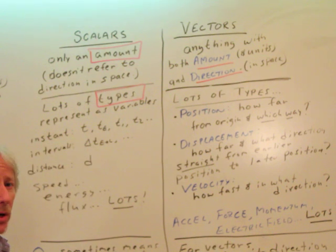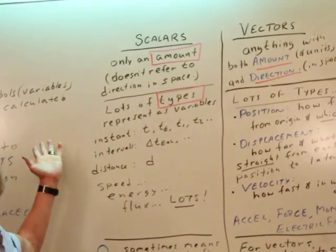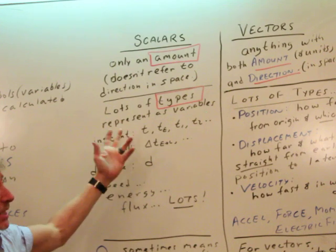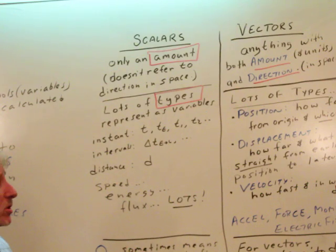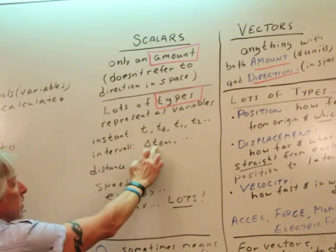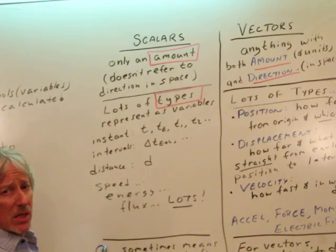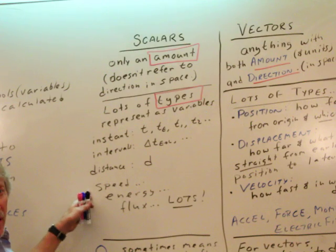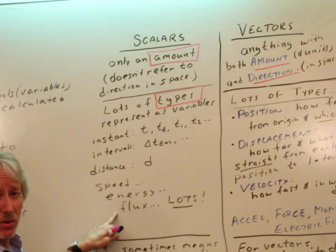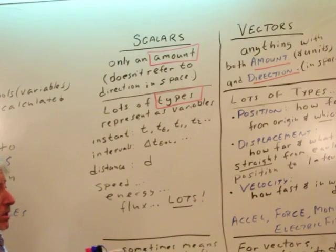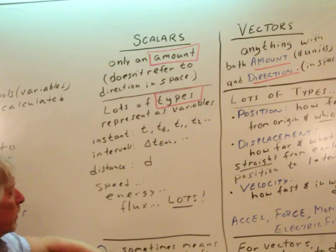All right, so let's give lots of examples. You've already learned some kinematics concepts. There's lots of types of scalars that we represent as variables. You know, instant t, better to subscript it, t earlier, t at state one, t at state two. There's no direction to that. An interval in time, delta t from earlier to later, there's no direction there. Distance is d. Speed is a scalar. Energy is a scalar. Flux is a scalar, which you don't know what that is. There's lots of scalars out there.